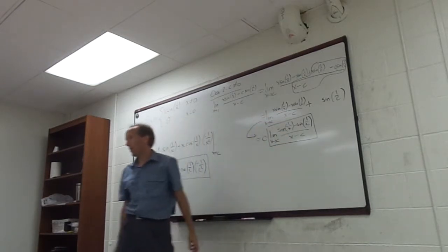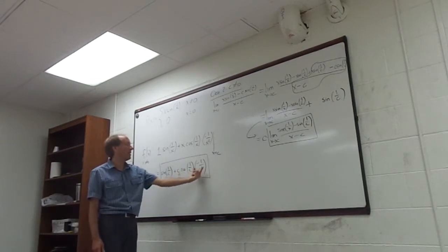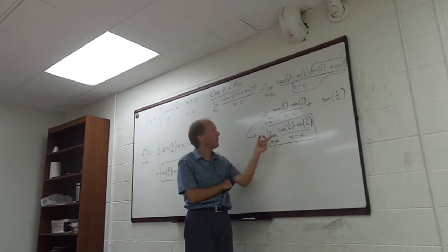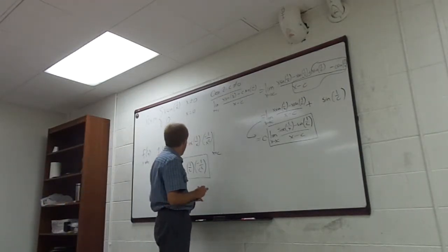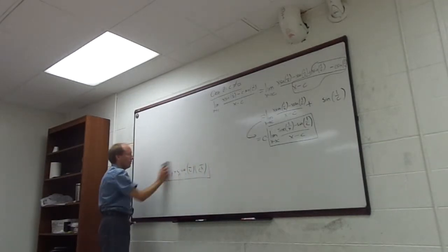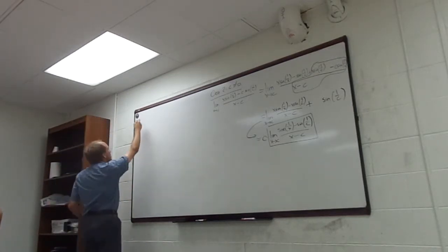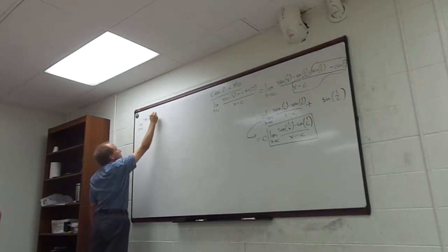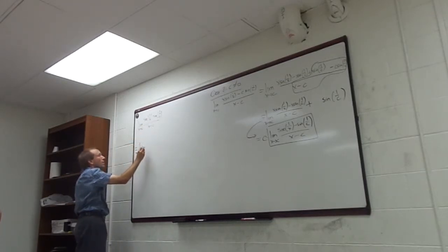This box is what we need to focus on. Somehow it should come out to cos(1/c) times negative 1/c². Does this look like a derivative at all? It kind of does, but not quite. So there are two major tricks you have to use to solve this problem. The first one is that you need to rewrite the limit of [sin(1/x) minus sin(1/c)] all over x minus c.